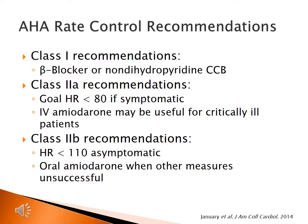Briefly reviewing the AHA rate control recommendations: our class 1 recommendations are to use a beta blocker or a non-dihydropyridine calcium channel blocker for rate control. Class 2A recommendations include a goal heart rate of less than 80 if the patient is symptomatic, and that IV amiodarone may be used when other measures are unsuccessful. For patients with preserved ejection fraction heart failure, a calcium channel blocker or beta blocker is still appropriate. For reduced ejection fraction, use a beta blocker, and if insufficient, add digoxin.